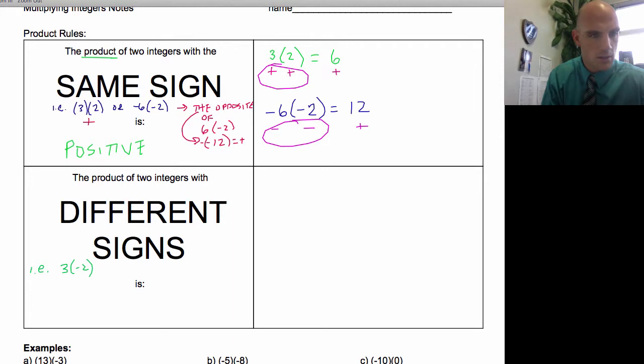So it'd be like, here's a group of negative two, here's a group of negative two, here's a group of negative two. Well, what's my product? It's negative.